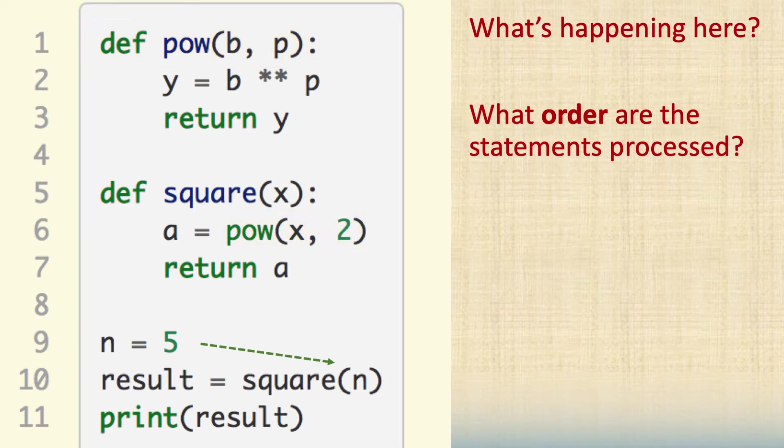If you notice that it says n equals 5 and then it's going to square 5. And then that n is going to be part, where does the n go? If you put the n in there it's squaring 5. So that means it's going to go to line 5 and it's going to square 5.